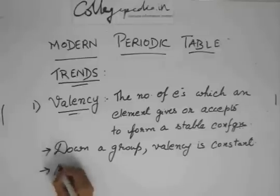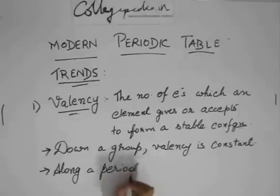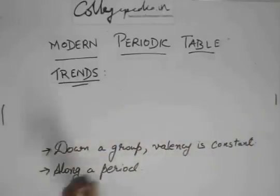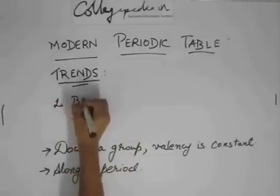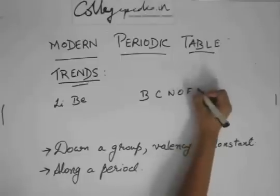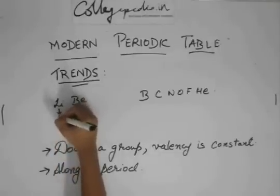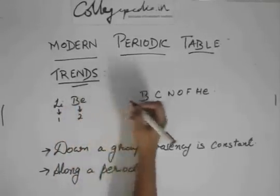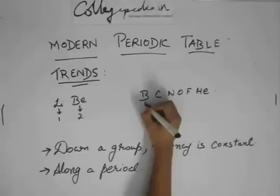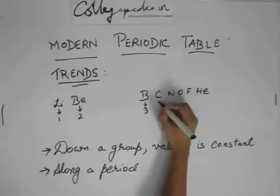And along a period, let's see what happens. Now, let us write this period, lithium, beryllium, then that gap, then boron, carbon, nitrogen, oxygen, fluorine, and then neon. So, you see, lithium is in group one, its valency is one. Beryllium's valency is two. You'll see that the number of electrons in the outermost shell of boron is three. So, its valency is three. Carbon has four. So, its valency is four.